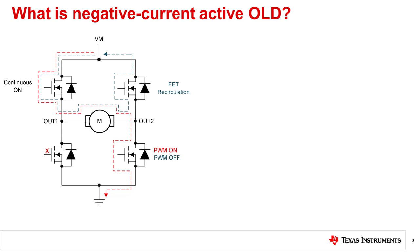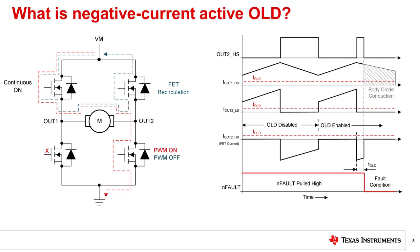In this example, the high side FET of the OUT1 channel is always switched on, and the low side and high side FETs of the OUT2 channel are operating in a complementary manner. This graph shows the waveforms of a false OLD flag when the negative current OLD setting is disabled and active OLD is enabled. Initially, for the first PWM cycle shown, active OLD is disabled to show the currents in the different FETs during motor operation. When active OLD is enabled in the second PWM cycle, the device registers a false OLD flag during the OUT2 high side FET conduction since the current through the OUT2 high side FET is less than IOLD. The nFAULT pin is pulled low and both high side and low side FETs of the OUT2 channel are disabled.